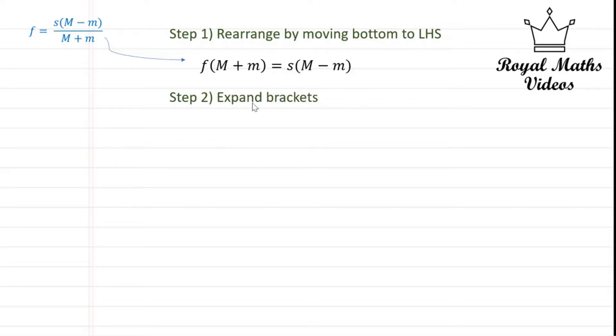Step two would be to expand these brackets out with each of these sides which then gives f times uppercase M plus f times lowercase m is equal to s times uppercase M minus s times lowercase m.